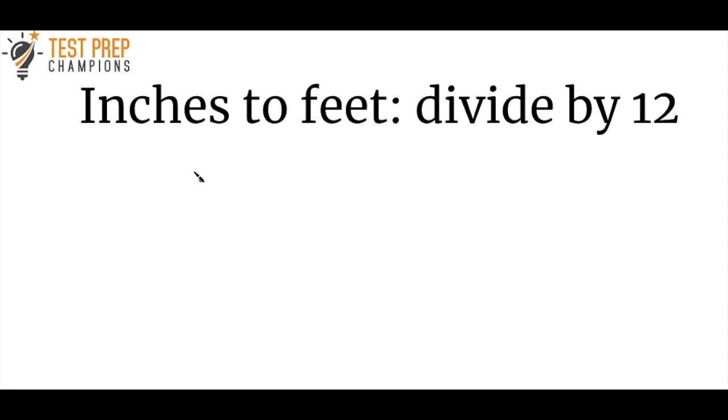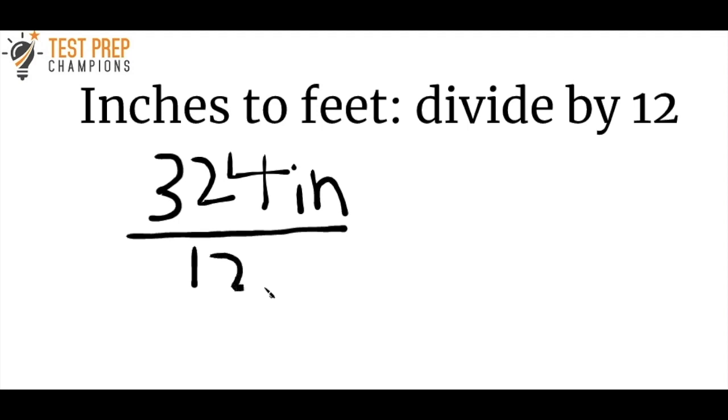To convert inches to feet, you just take the number in inches and divide it by 12. For example, let's say you're given 324 inches. How would we convert that to feet? We have 324 inches, we want to convert it to feet. All we have to do is divide by 12. So we do 324 divided by 12, and if you enter that into your calculator, you'll get 27 feet.